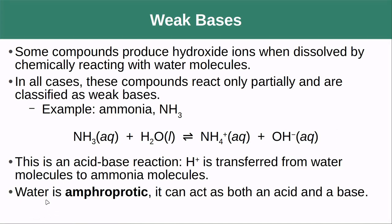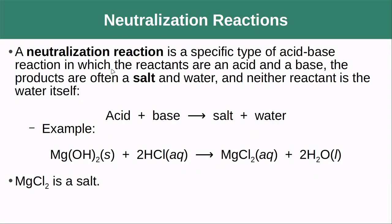You can have the case where a species is able to do both — it can give up an H⁺ and act as an acid, or it can accept a proton forming a hydroxide ion and act as a base. Water is a good example: it is amphiprotic, it can do both. A neutralization reaction is a specific type of acid-base reaction in which the reactants are an acid and a base. When you add an acid to a base, you get neutralization, and the products are often a salt and water.